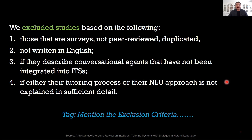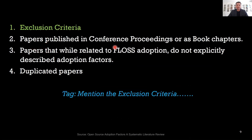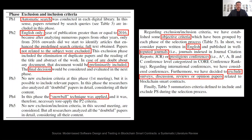By reading SLR papers in your discipline, you can see what kind of inclusion and exclusion criteria they have used. For example: papers published in conference proceedings or as book chapters are excluded; papers related to FLOSS adoption that do not explicitly describe adoption factors are excluded. This is a good example of content-based exclusion criteria. Duplicate papers are also excluded, since searching multiple databases makes duplication likely.